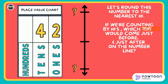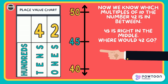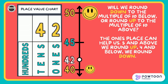Let's round this number to the nearest 10. If we're counting by tens, which 10 would come just before and just after on the number line? Pause the video and discuss this with your partner. Now we know which multiples of 10 the number 42 is in between. 40 is down below and 50 is up above on the number line. 45 is right in the middle. Where would 42 go? Point to it on the number line. Will we round down to the multiple of 10 below or round up to the multiple of 10 above? The ones place can help us: 5 and above, we round up; 4 and below, we round down. If we look at 42, we see a 2 in the ones place. The 2 tells us 4 and below, we round down. So we know that 42 rounded to the nearest 10 is 40.